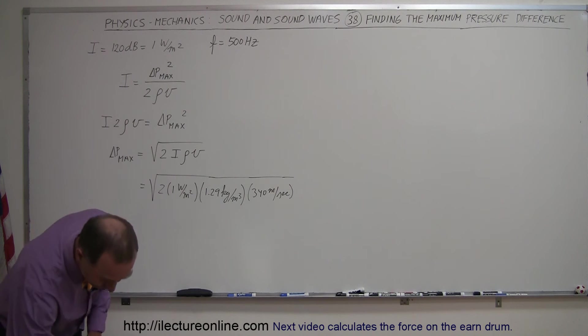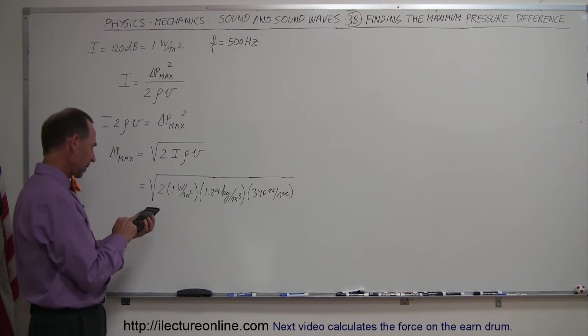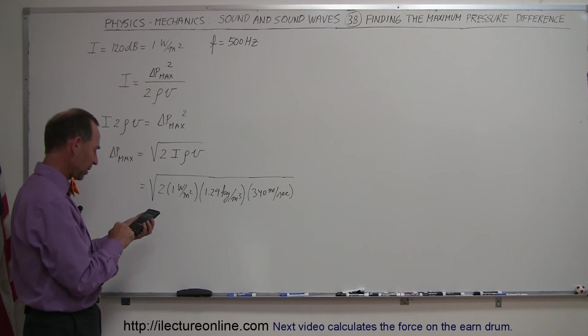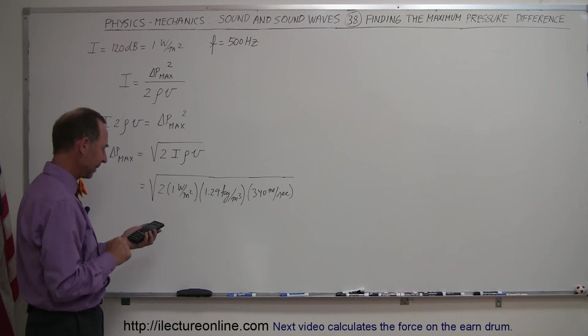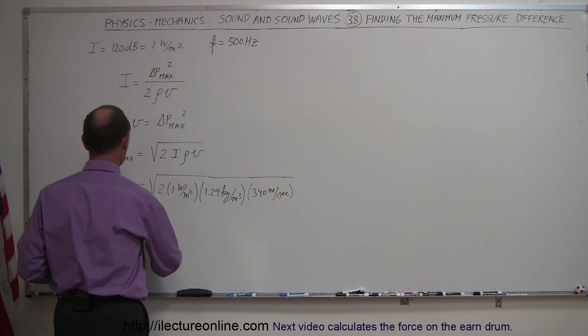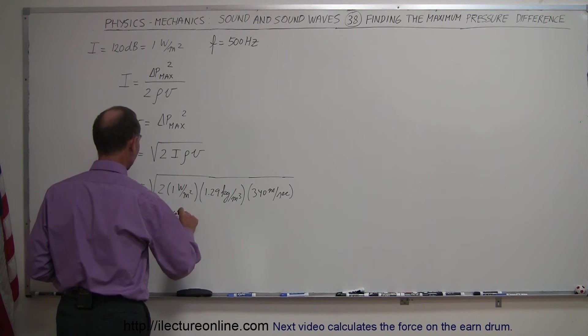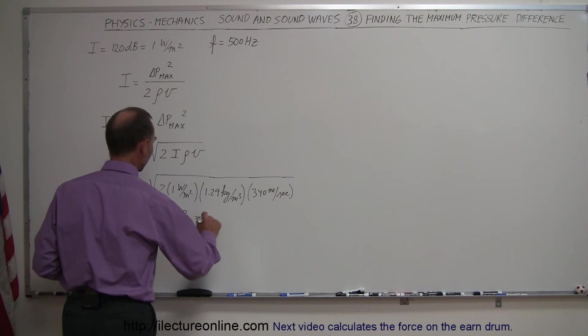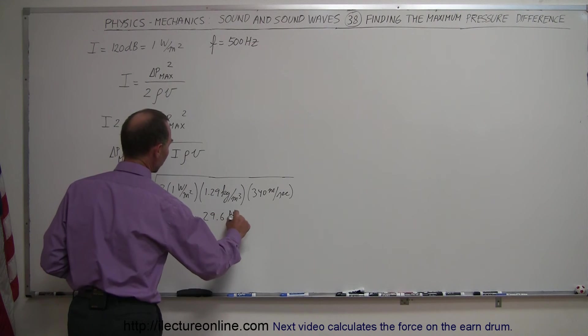Now we need a calculator. So we have 2 times 1.29 times 340, and then we take the square root of that, and it's 29.6 pascals. This equals 29.6 pascals, which is 29.6 newtons per square meter.